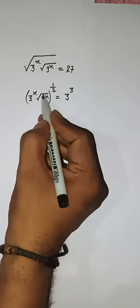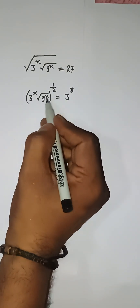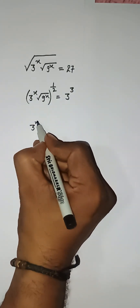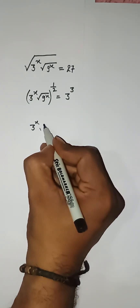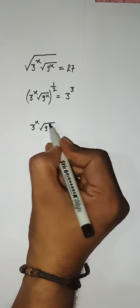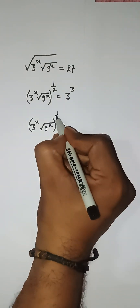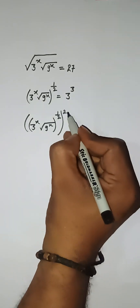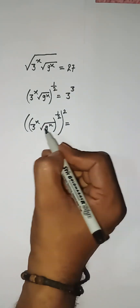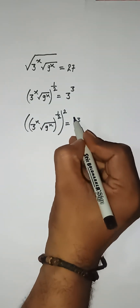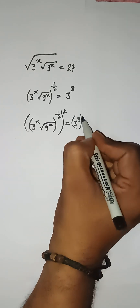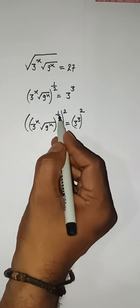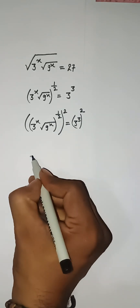Now I need to remove this square root, so I'm putting a square on both sides. Here we have 3 to the power x and then root under 9 to the power x, this power 1 by 2, I am writing as it is, and raising power here too. If I raise power on the left-hand side, I need to raise power on the right side, so I raise here by 2. Now this power and this power will multiply together.